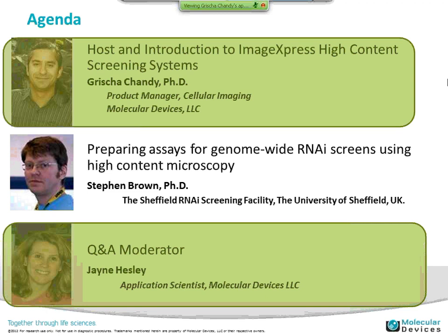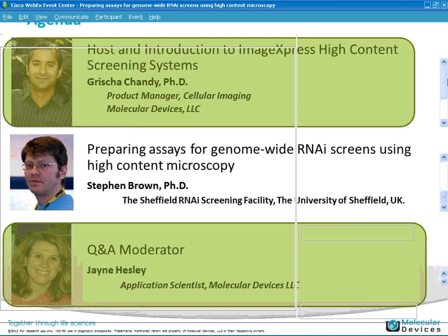Steve Brown actually started his PhD working with tomato plants, but he moved over to work on embryonic tissue formation in Drosophila and migrated to transition mechanisms in that model organism, looking at the JAK-STAT pathway. Since 2008 he has been managing the Sheffield RNAi Screening Facility, a national screening resource for Drosophila, and has lately migrated from solely doing Drosophila RNAi screening to human siRNA screening. I'd like to pass the presentation over to Steve.